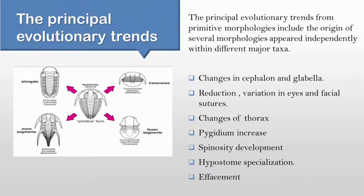Trilobite is a sea creature that was dominant in the Paleozoic era and basically an ancient arthropod. Its morphology is divided into cephalon, thorax, and pygidium.